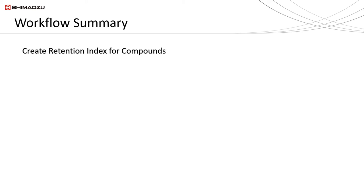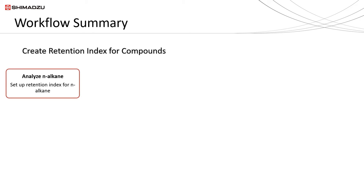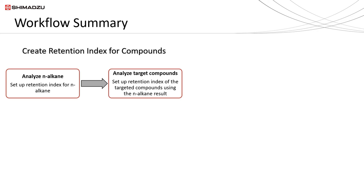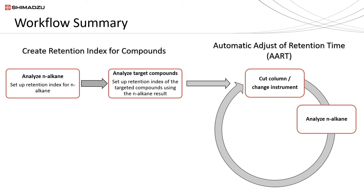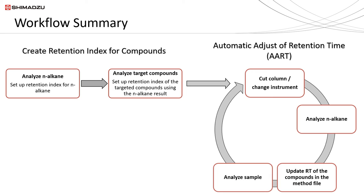To sum up the whole process: first, create a retention index for your targeted compounds by injecting the n-alkane solution, processing the result, and using it to create a retention time index. Once the retention index for compounds has been created, you may use the AART function whenever you cut the column or change to a different instrument — analyze the n-alkane, then update the retention times in the method file. Once done updating, proceed with sample analysis. If peaks start to tail or the instrument needs to be shut down for preventive maintenance, you may repeat this cycle of AART again.